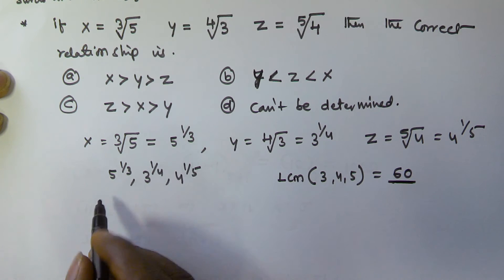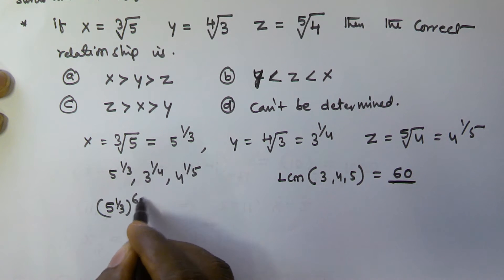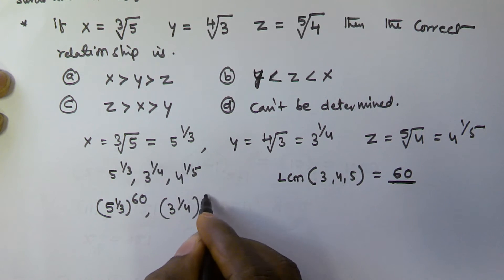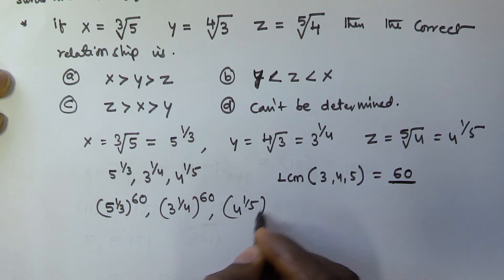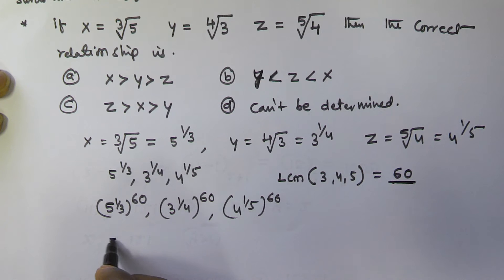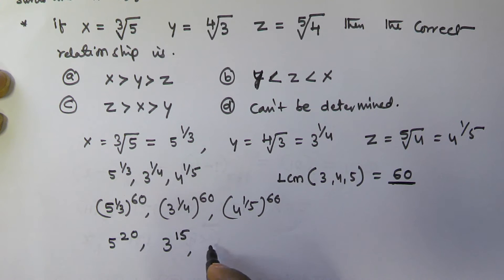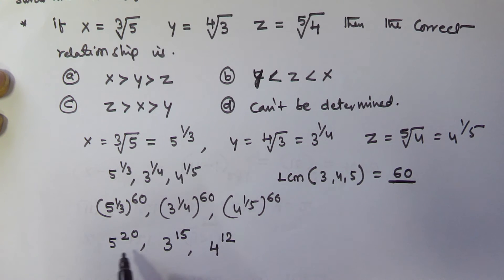What I will do is find the 60th power of all these numbers: 5^(1/3) raised to the power of 60, 3^(1/4) raised to the power of 60, and 4^(1/5) raised to the power of 60. This gives us 5^20, 3^15, and 4^12 respectively.